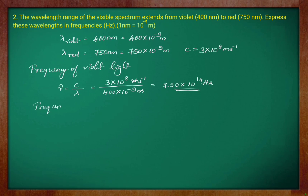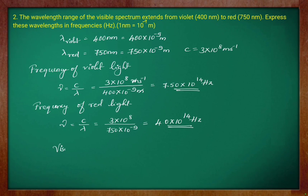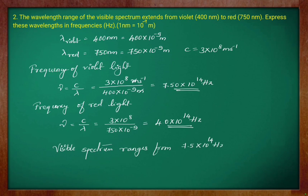Let us calculate the frequency of red light in the same way. Frequency is C by lambda, which is 3 into 10 to the power 8 divided by the wavelength of red light, that is 750 into 10 to the power minus 9 meter. Upon simplification, we get 4.0 into 10 to the power 14 hertz. So the visible spectrum ranges from 7.5 into 10 to the power 14 hertz to 4.0 into 10 to the power 14 hertz in terms of frequency.